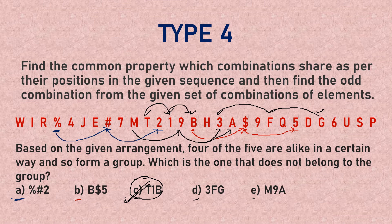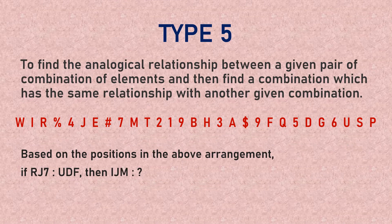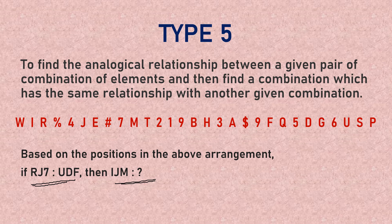These types of questions are very common in competitive exams. The last type is Type 5: find the analogical relationship between a given pair of element combinations and find a combination which has the same relationship with a given combination. One combination is complete and another is incomplete — you must fill in the question mark.